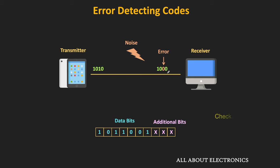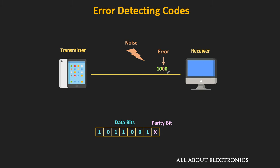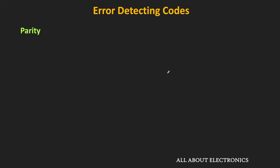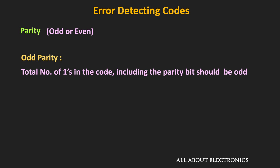There are many different methods for error detection, but the simplest one is to add the parity bit along with the data. There are two types of parity: odd parity and even parity. In case of odd parity, including the parity bit, the total number of 1s in the code should be equal to odd.